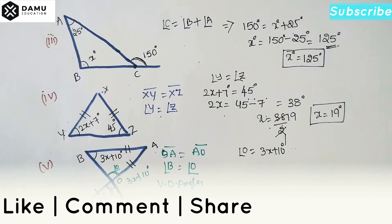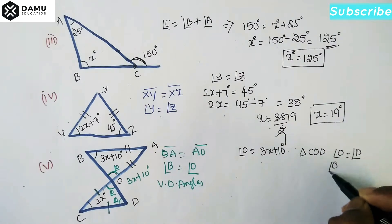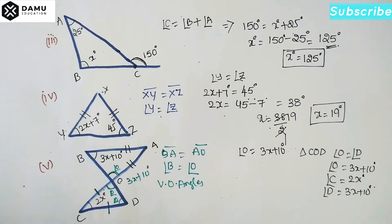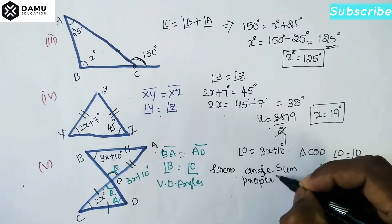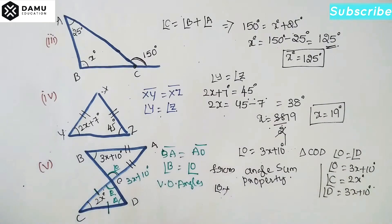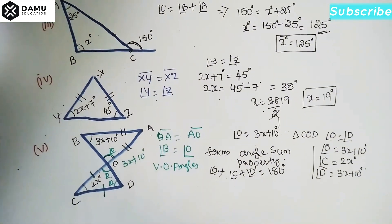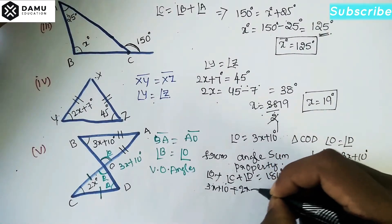This side equals that side, so the opposite angles are also equal. From triangle COD: angle O equals angle D, so angle O equals 3X plus 10 degrees, angle C equals 2X degrees, and angle D also equals 3X plus 10 degrees. Using the angle sum property: angle O plus angle C plus angle D equals 180 degrees.